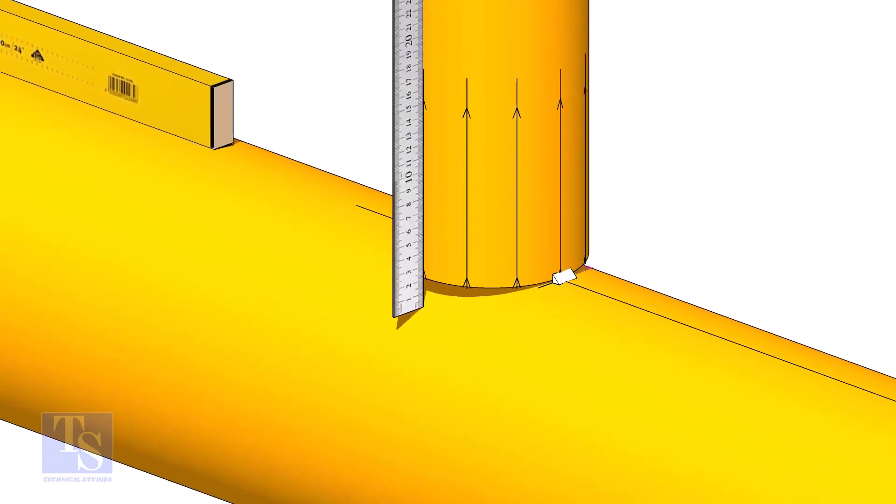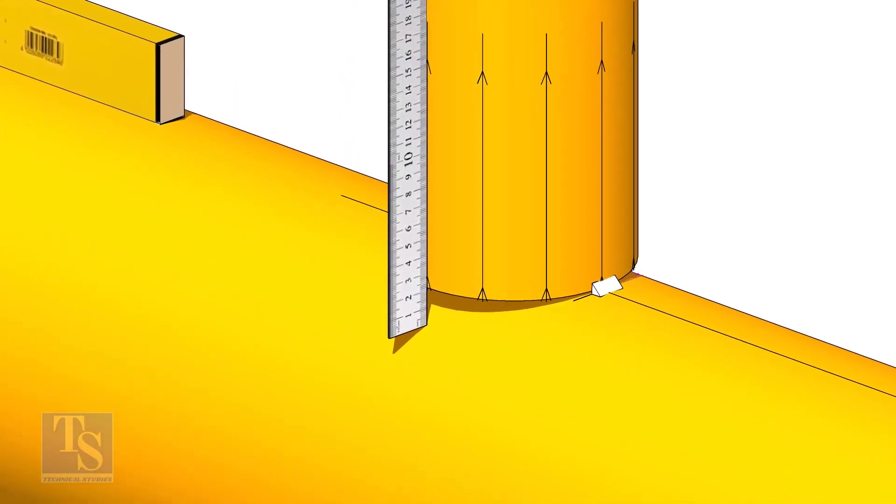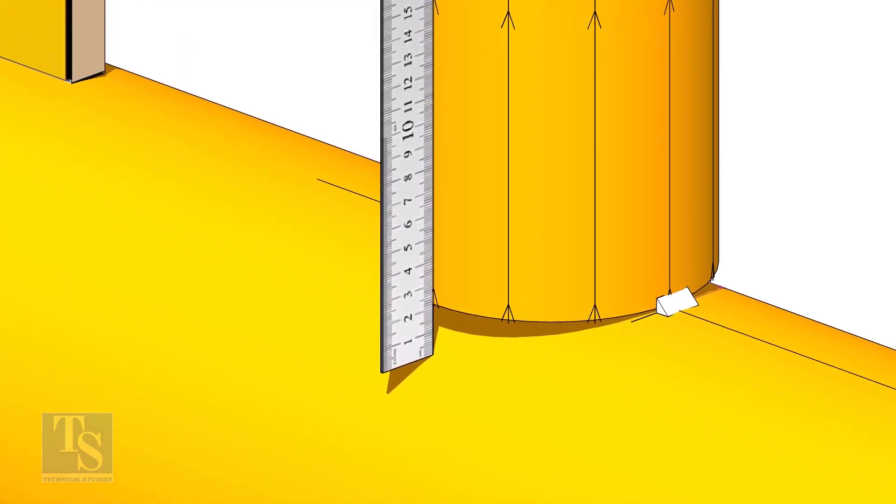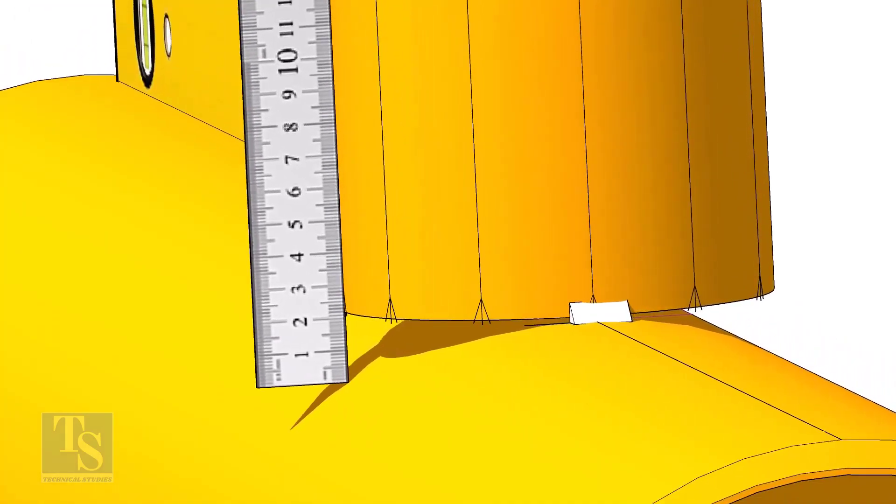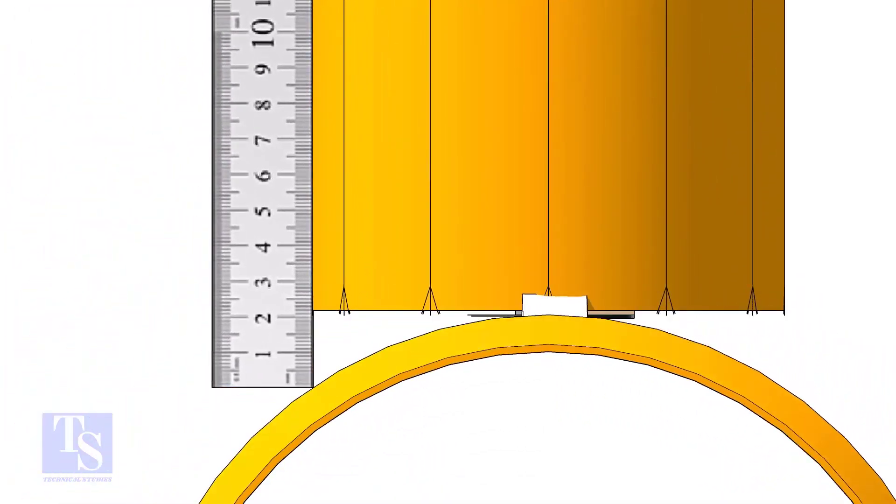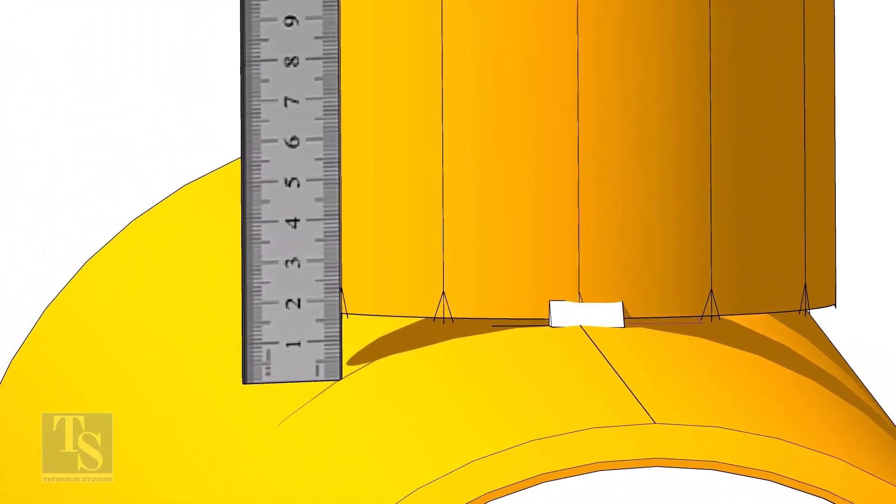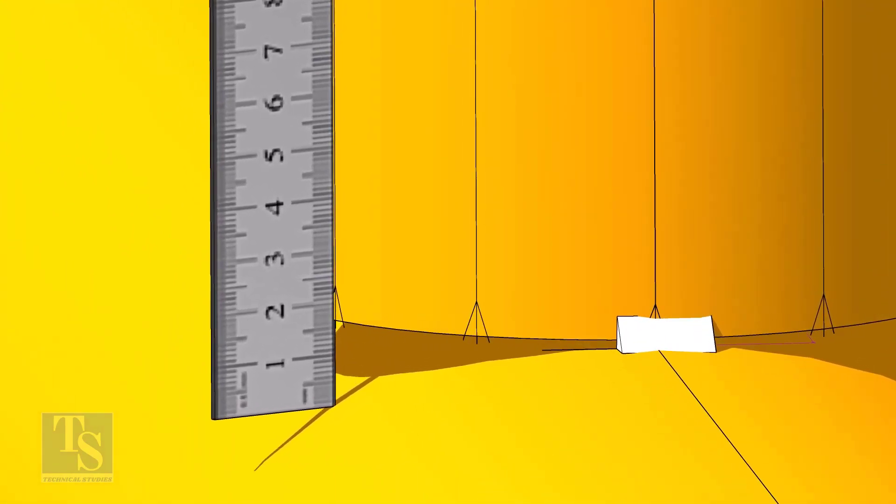Check the gap between the header and the branch as shown. When you measure, make sure the scale is vertical and is on the line on the branch pipe. Move the scale to the next vertical marking on the branch. Mark the distance on the branch from the header. In this case, it is 22 millimeters.